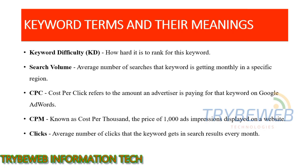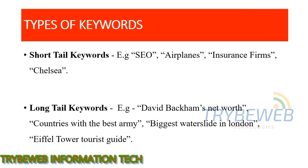CPM, known as cost per thousand, is the price of 1,000 ad impressions displayed on a website. Although CPC is the best way to generate revenue as a publisher, CPM is also important if you have lots of daily traffic. Clicks refers to the average number of clicks a keyword gets in search results every month. Not all keywords get clicked — a keyword like 'how old is Google' gives a direct answer on the search engine result page, so users won't need to click your website.